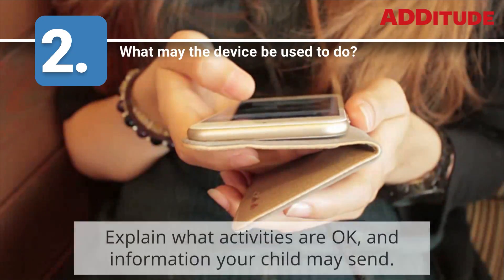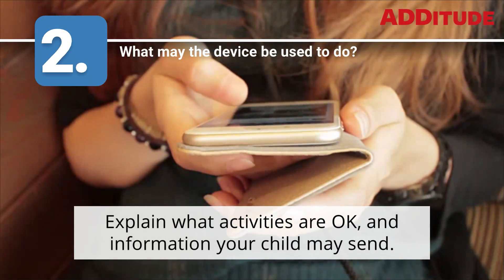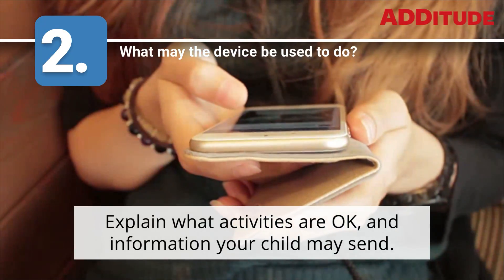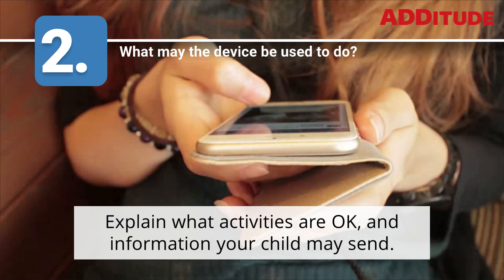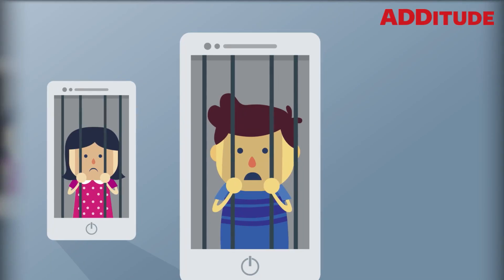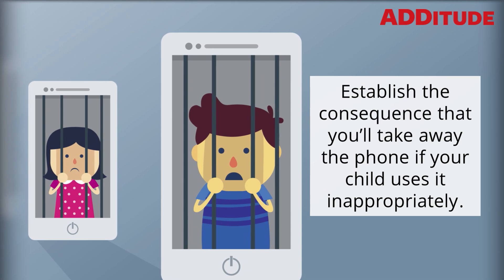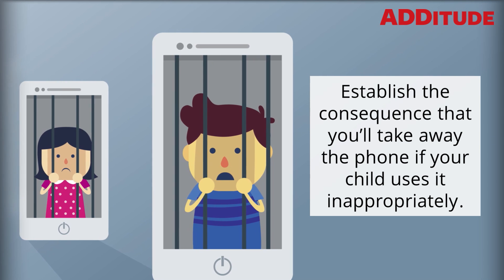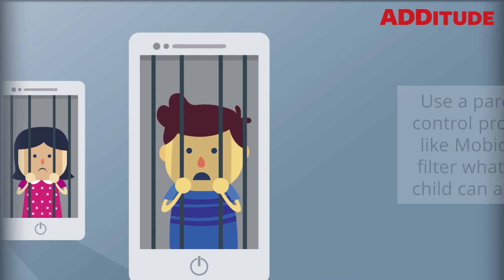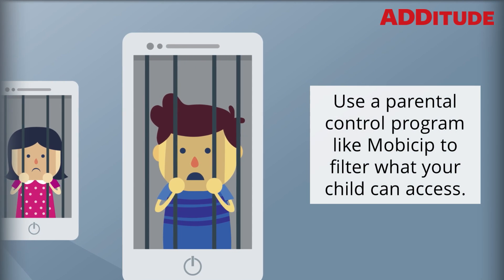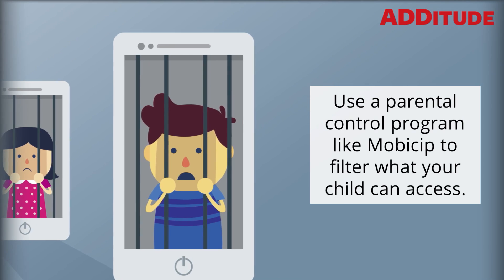2. What may the device be used to do? Explain what activities are okay and what information your child may send. Establish the consequence that you'll take away the phone if your child uses it inappropriately. Use a parental control program like MobiChip to filter what your child can access.